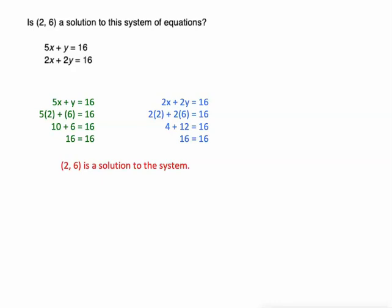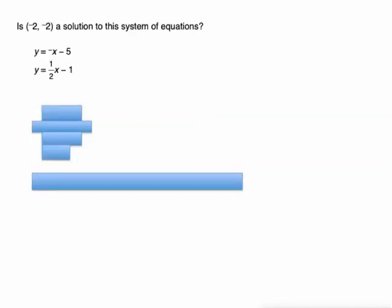Here's another point, (-2, -2), and another system. These equations are written in slope-intercept form. Here's the first one: y = -x - 5. We're going to replace x with -2 and y with -2 because that's the point we're checking.